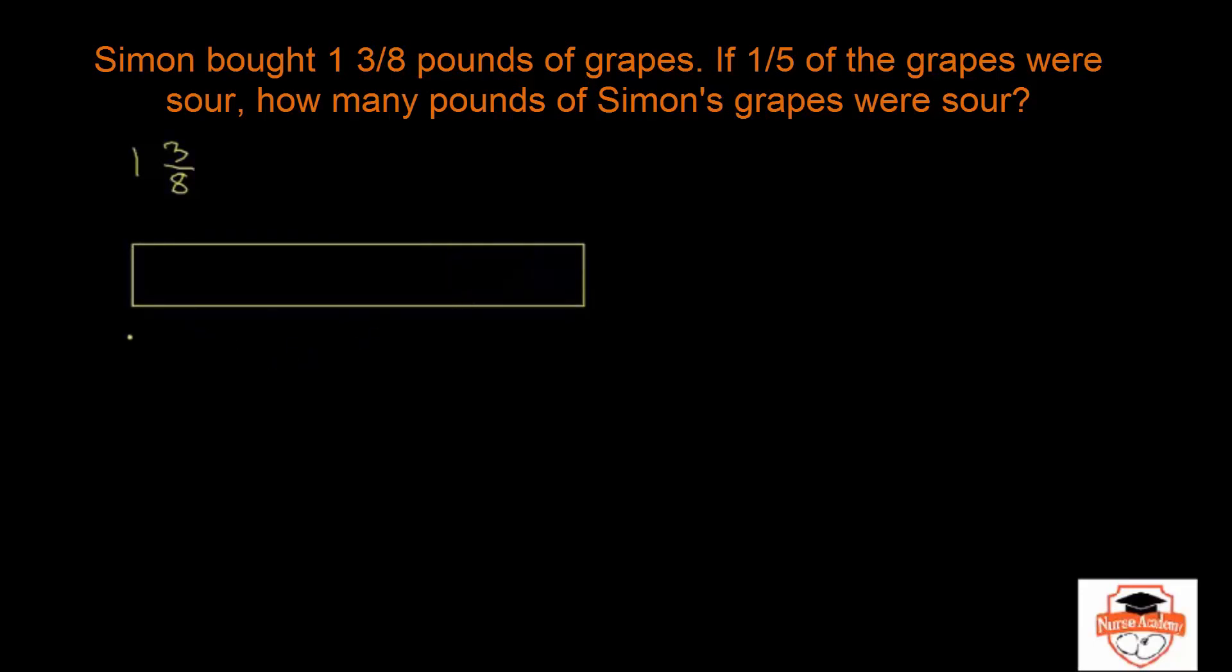So this rectangle from here to here represents 1 3/8 pounds. And they said that 1/5 of this is sour. That means if you divide this into 5 equal parts, I'm going to try and do it. Not sure if I can get them all equal.